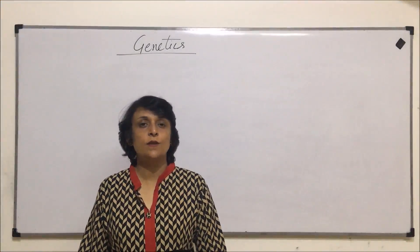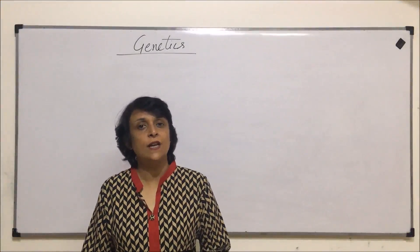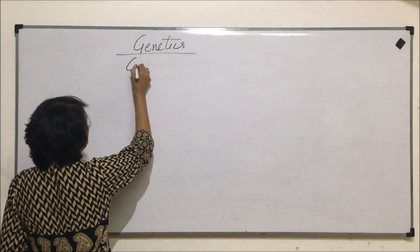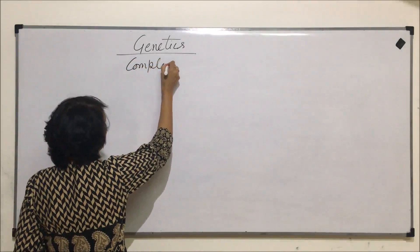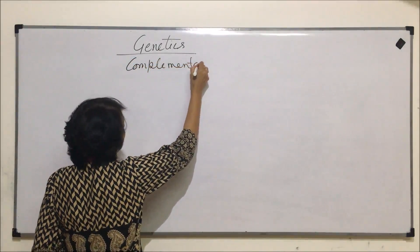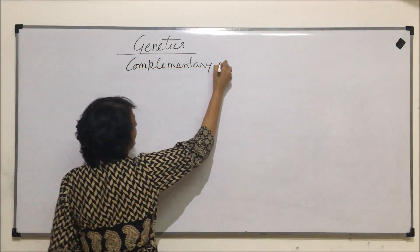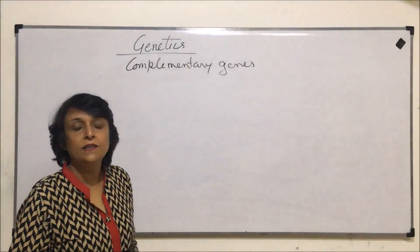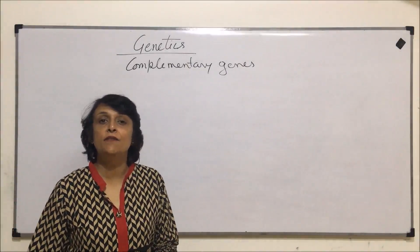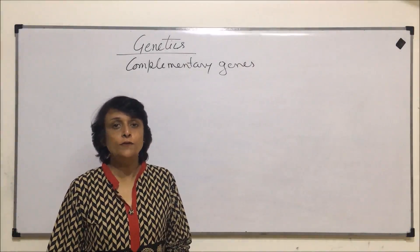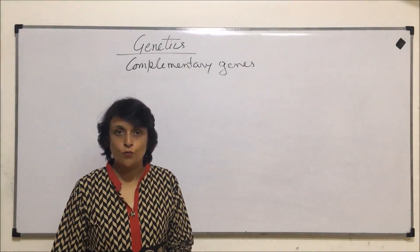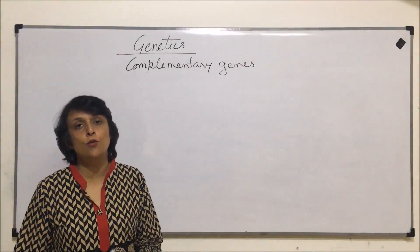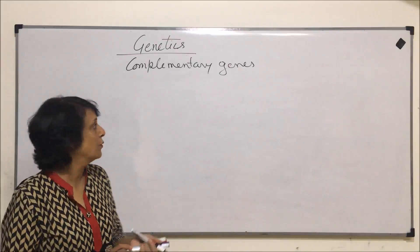In this video we will discuss another type of inheritance shown by complementary genes. Complementary genes are genes located at different loci of the same or different chromosomes, but they work together to show one type of expression or phenotype.